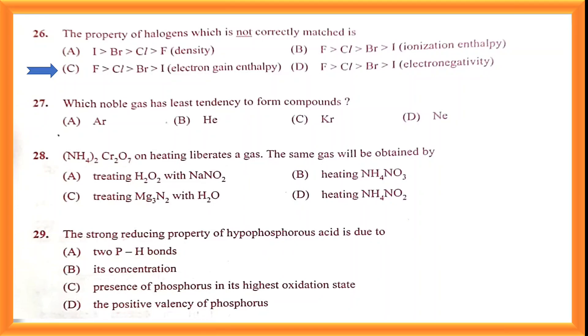Question number twenty-seven: which noble gas has the least tendency to form compounds? It is helium. Option B is the correct answer. Question number twenty-eight: ammonium chromate on heating liberates a gas, and the same gas will be obtained from NH₄NO₂. Option D is the correct answer.